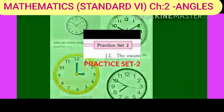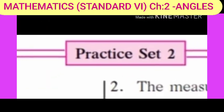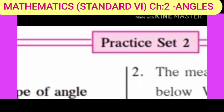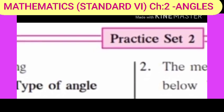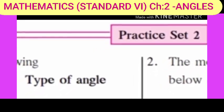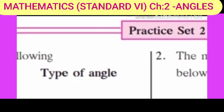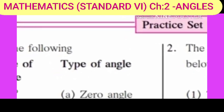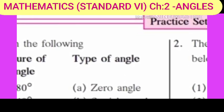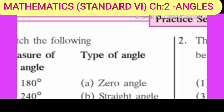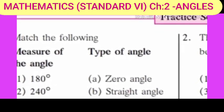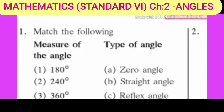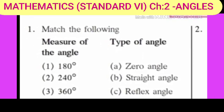Now see the clocks. Here also you have to identify the different types of angles. Now let us start with our practice set number 2. See the first question. It is match the following. Here, measure of the angles are given to one side and to the other side are type of angles. You have to match it correctly. Number 1 is 180 degrees. You have to identify which type of angle it is. Yes, right, it is 180 degrees, means straight angle.